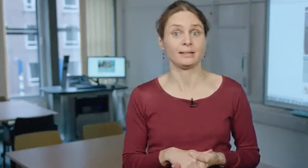The third task criterion says that there is some sort of relationship with real-world activities. In other words, tasks are similar to or simulate activities that people do in real-life settings. Again, returning to the example of the MAP task, although people increasingly rely on their phones for directions, people like me still stop others in the street for help if they get lost.